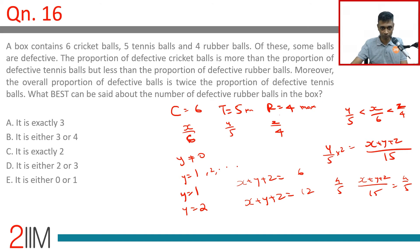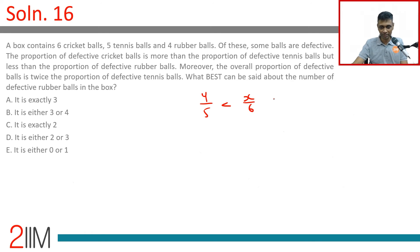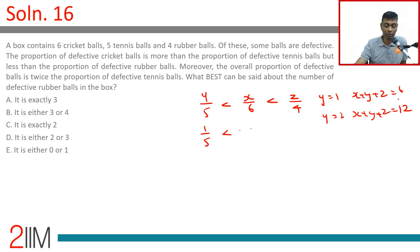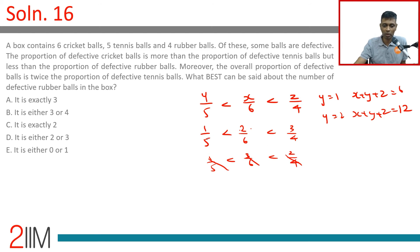Taking the inequality y/5 < x/6 < z/4 with y = 1 and x + y + z = 6: x cannot be 1 since 1/6 is not greater than 1/5. x could be 2 or 3. If x = 4, there's no room for z. Testing x = 2, z = 3: 1/5 < 2/6 < 3/4 — this works. Testing x = 3, z = 2: 3/6 = 1/2 = 2/4, which are equal, so it fails. Therefore y = 1, x = 2, z = 3 is the only valid solution.